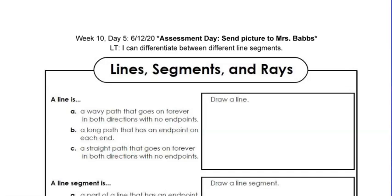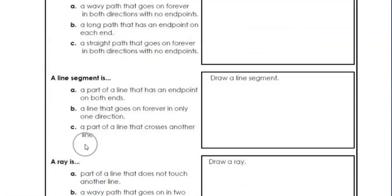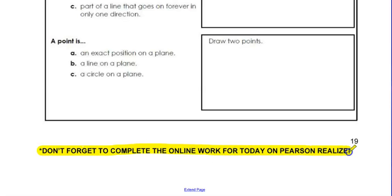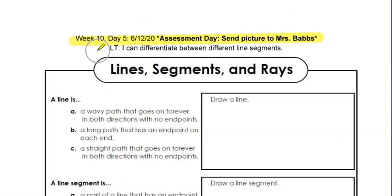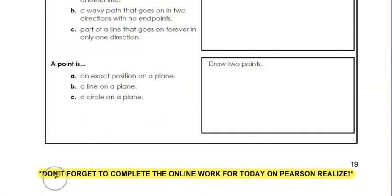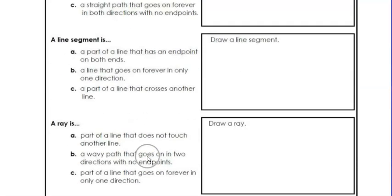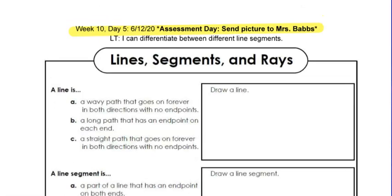Remember to send a picture of both pages 19 and 20 on Friday, June 12th, to either the Remind app or my email in the packet. You only need to send the assessment pages — not every page this week. Also, don't forget you have Pearson Realize work listed as week 10 with four assignments for the entire week. You can start on Monday or finish it all on Friday — however works for you. As always, if you have any questions about any assignments or assessments, reach out through the Remind app or email. Bring these assignments to our Zoom calls on Tuesday and Thursday this week.